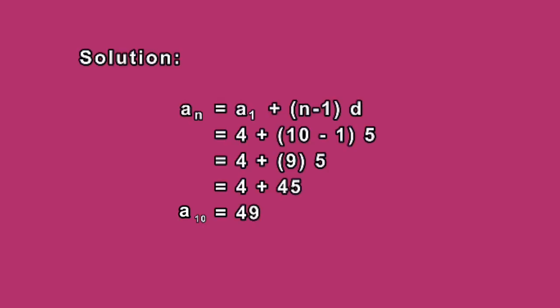Now, let us solve the problem together! As you can see, we used the formula a_n = a_1 + (n - 1) × d, where a_n is the term that we are looking for, and a_1 is the first term of the sequence, and n is also the nth term that we are looking for, and d is equal to the common difference. So in our problem, our a_1 is 4, since it is the first term of the sequence, and n is equal to 10, since we are looking for the 10th term of the sequence, and our common difference is 5.